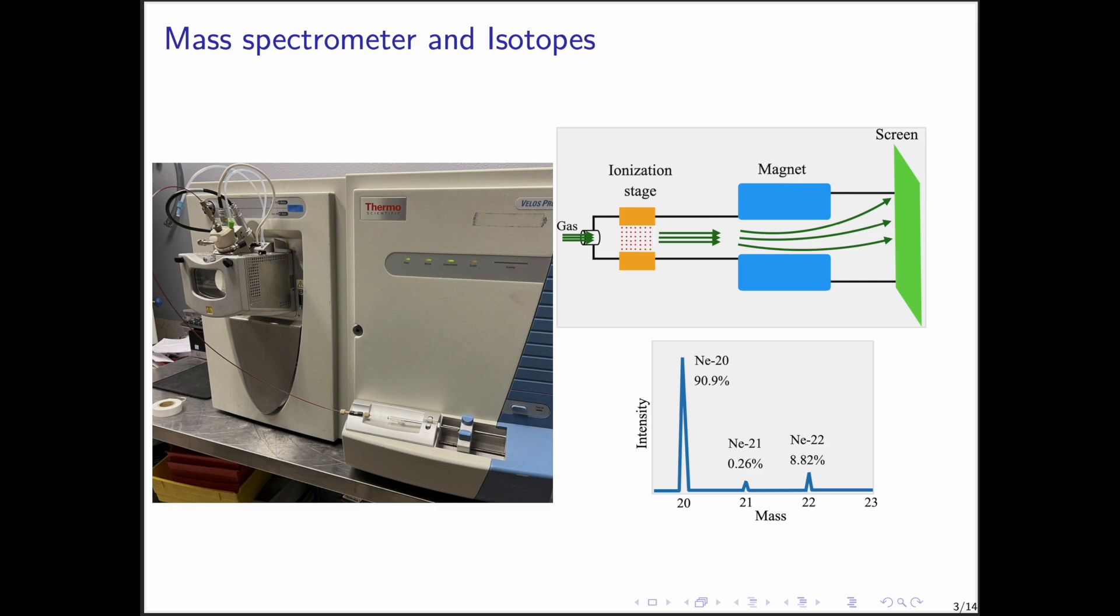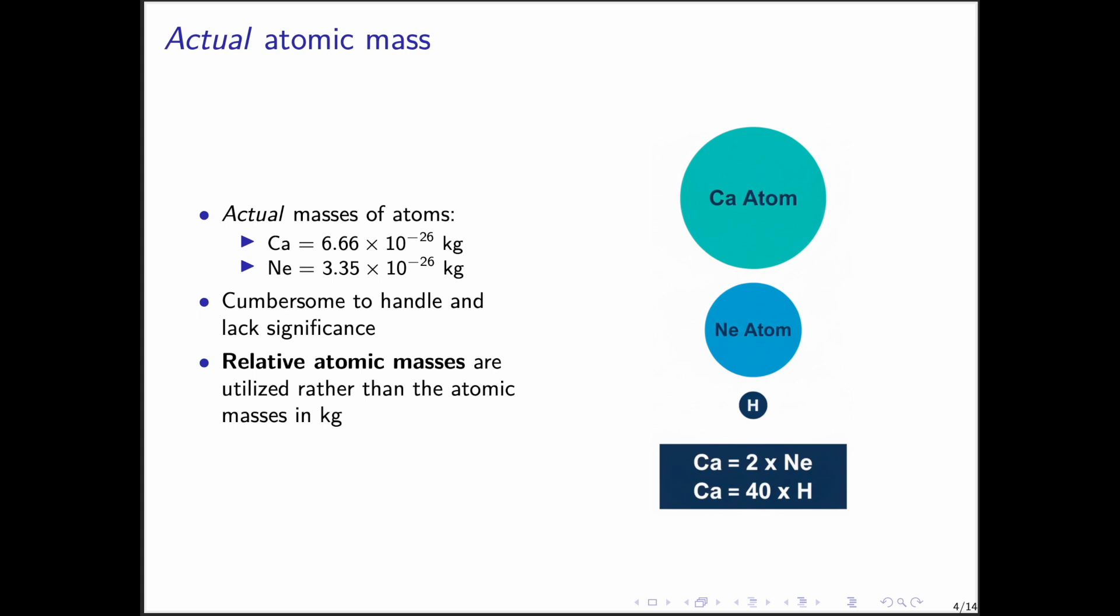Now the actual masses of atoms are extremely small. For example, a calcium atom weighs about 6.66 times 10 to the minus 26 kilograms, while a neon atom is about 3.35 times 10 to the minus 26 kilograms. We notice how these numbers are meaningless and hard to handle. It's much more useful to know that a calcium atom is about twice as heavy as neon, and about 40 times heavier than hydrogen.